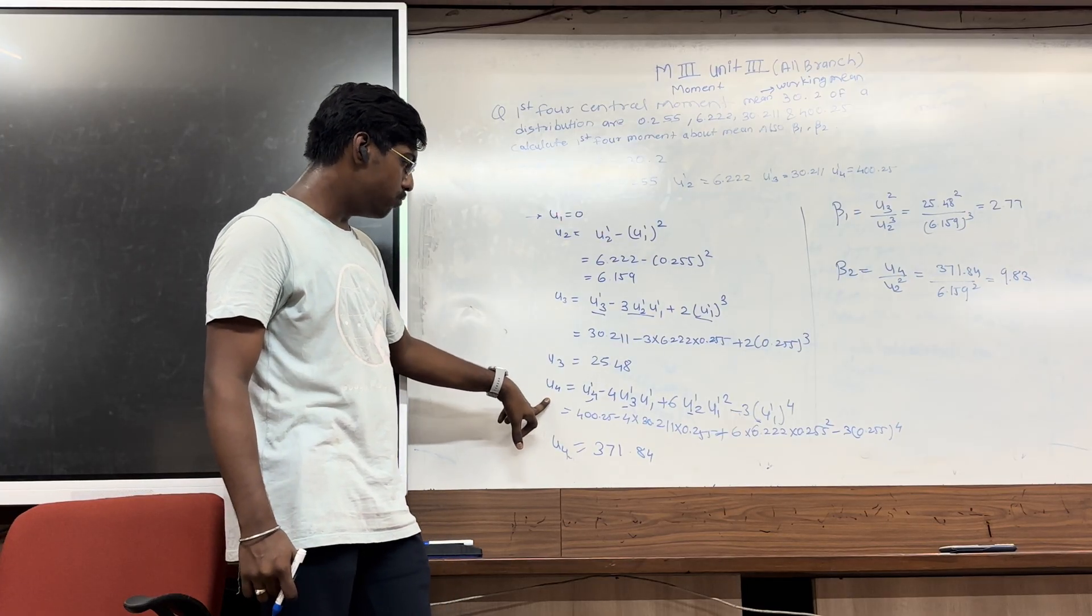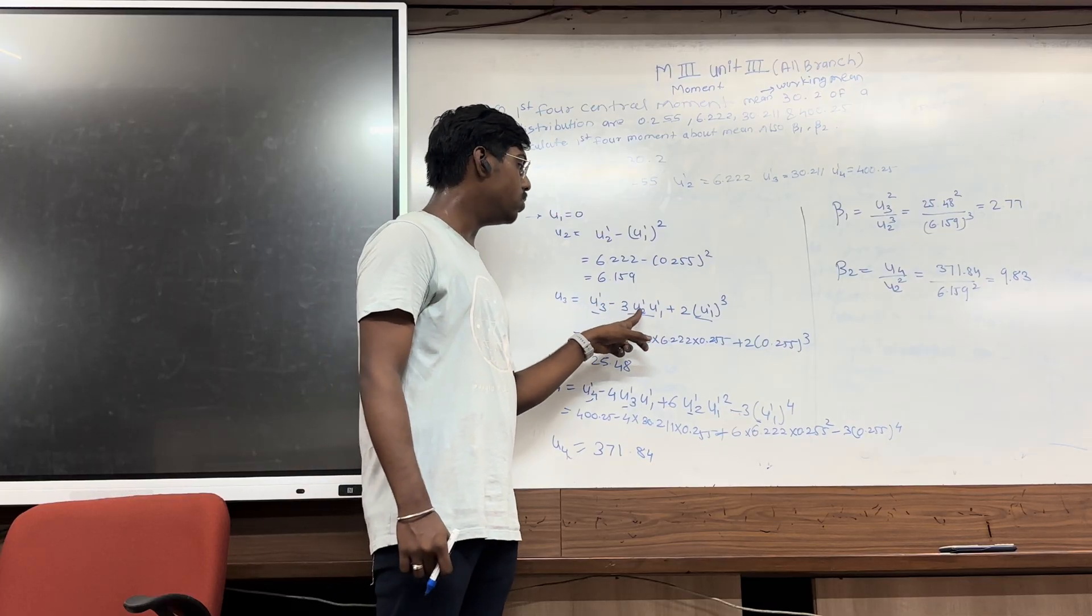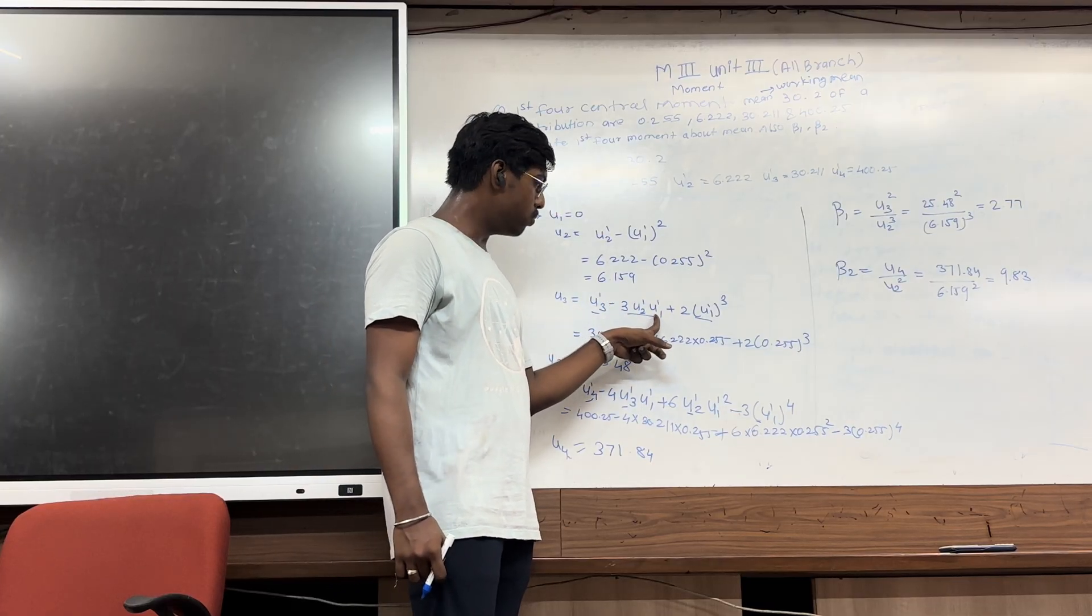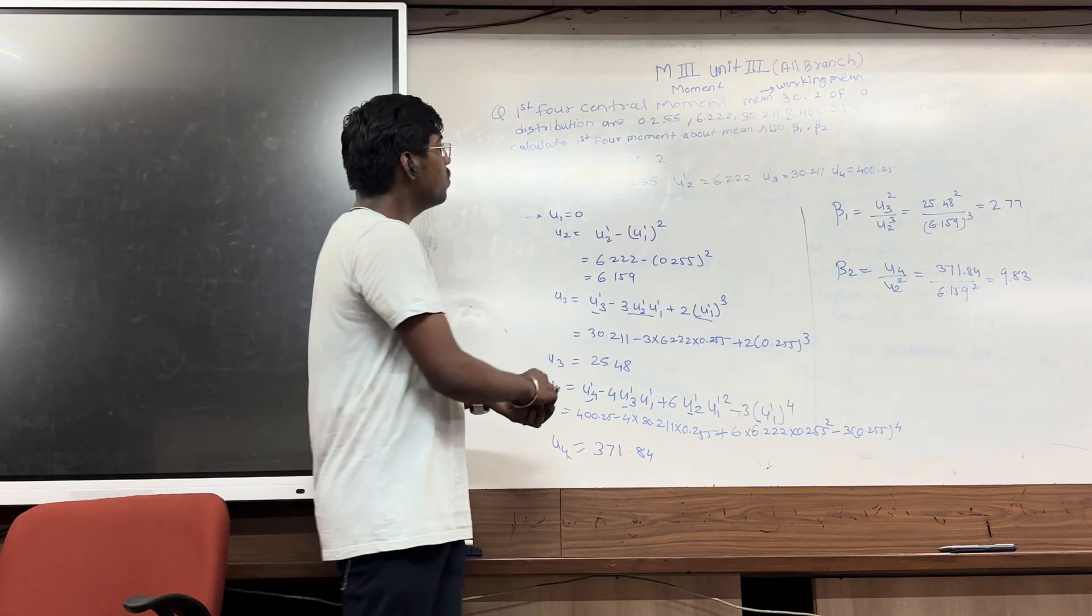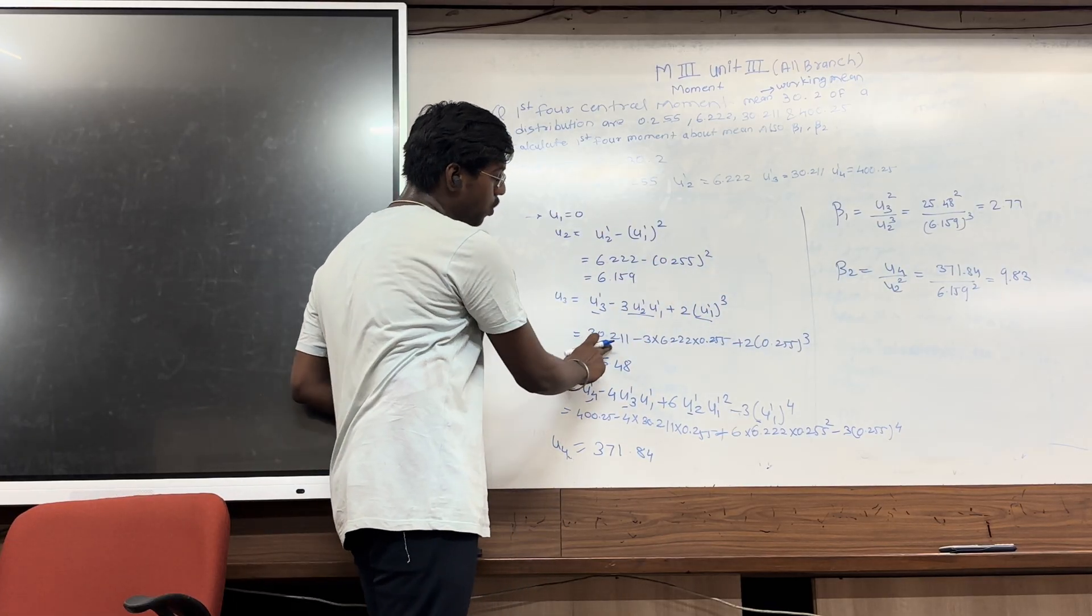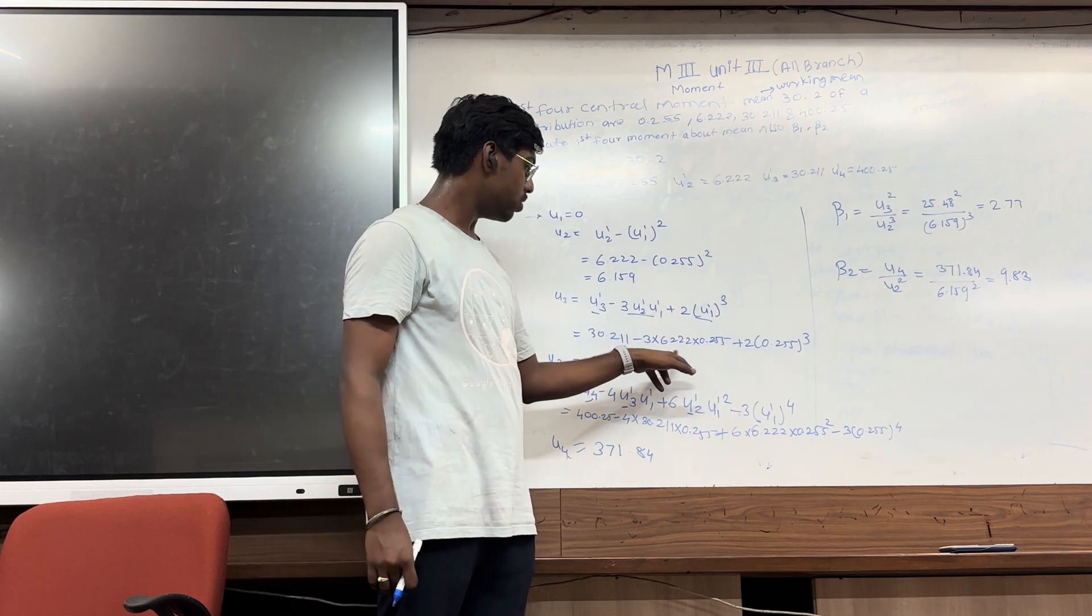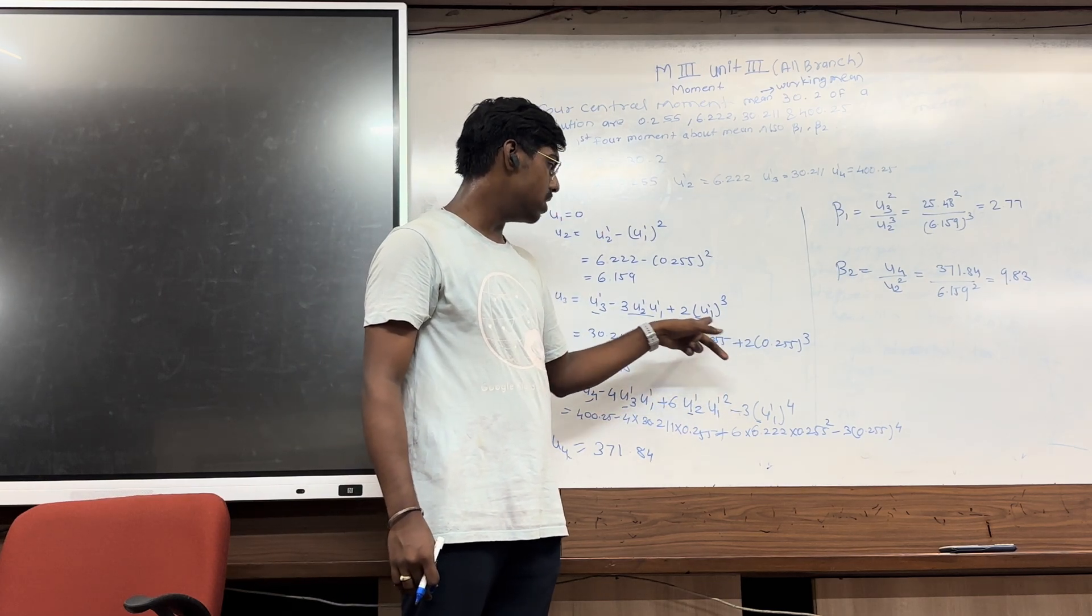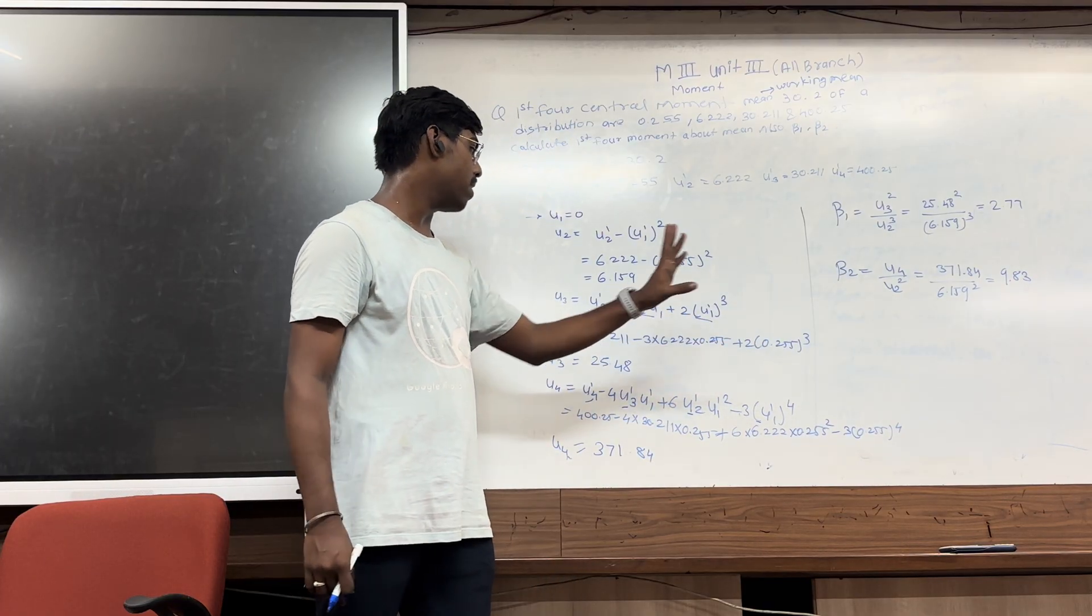After that, the mu3 is mu3 dash minus 3 into mu2 dash into mu1 dash plus 2 into mu1 dash cube. So put the values: mu3 dash is 13.211 minus 3 into 6.222 into 0.255 plus 2 into 0.255 bracket cube. So answer will be 25.48.